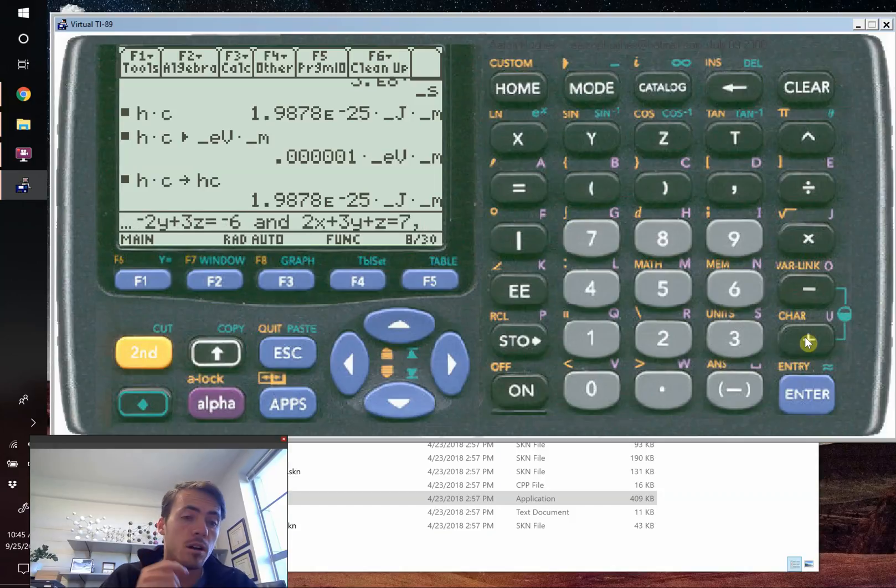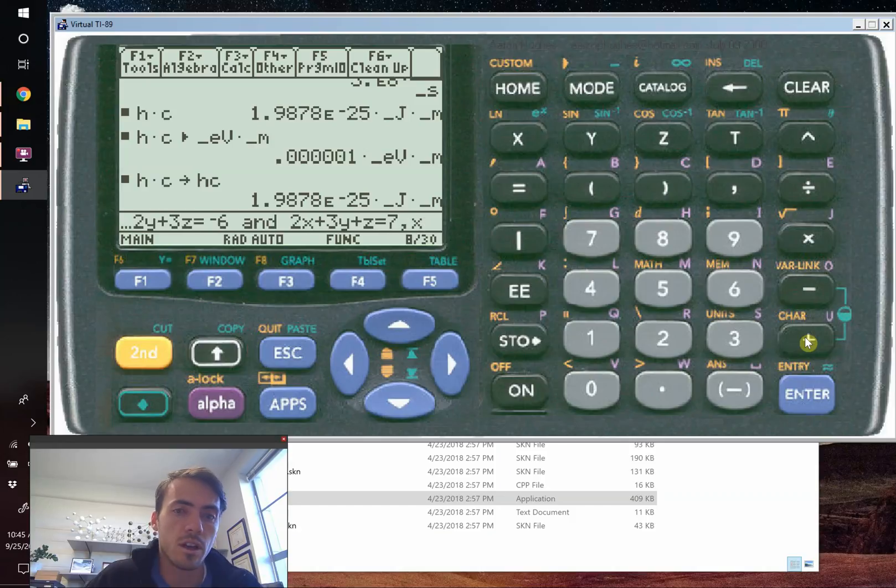You have to hit comma now, and comma then lets you say I want to solve for these equations, and you have to tell it what variable you want to solve for. It's going to solve for all of them, but you have to give it a variable. So let's just say X. Then you put a close bracket on it and hit ENTER.